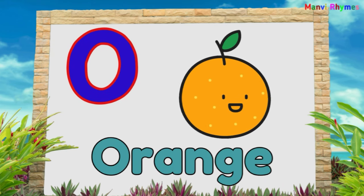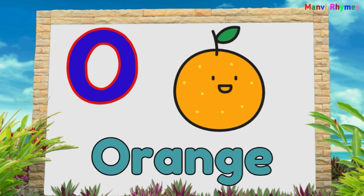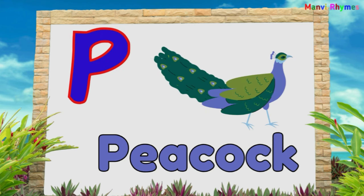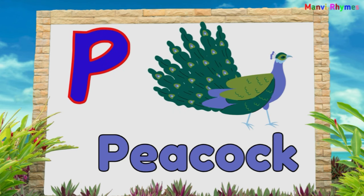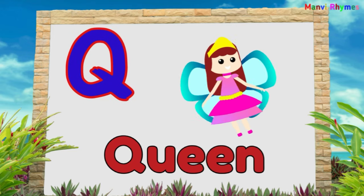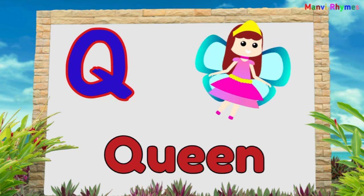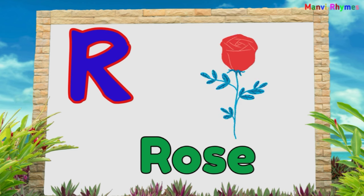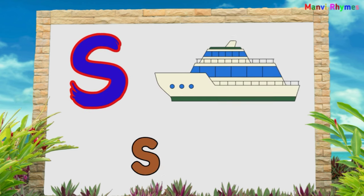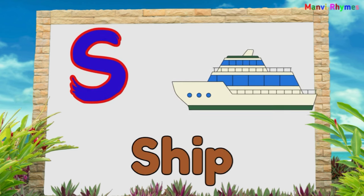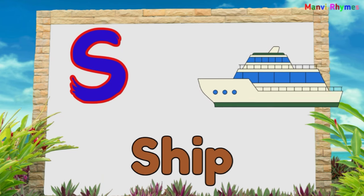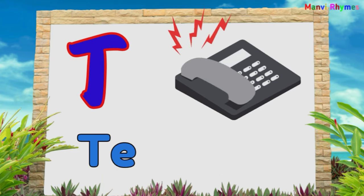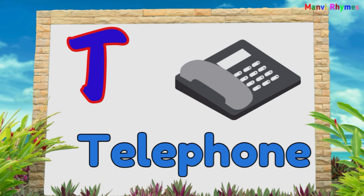O for Orange. P for Peacock. Q for Queen. R for Rose. S for Sheep. T for Telephone.